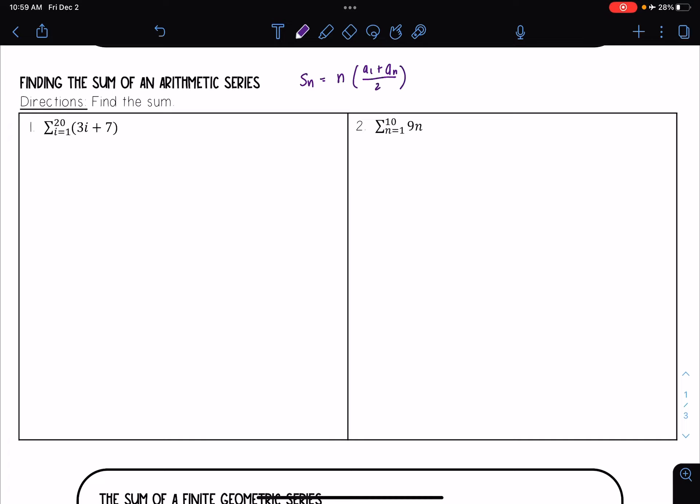I first need to figure out what my first term is and what my nth term is. And n is always just going to be where our sum is going. So here my sum is going to 20, and so that means that n is equal to 20.